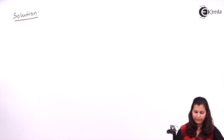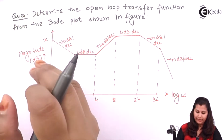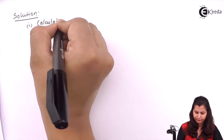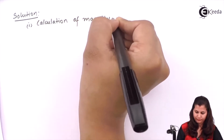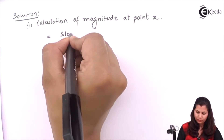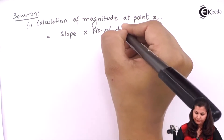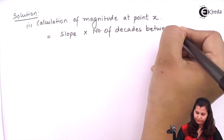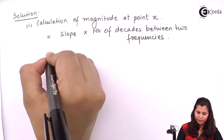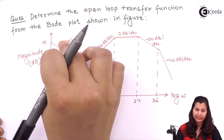First we will calculate the magnitude at this point, because it is in the positive side. Its magnitude will be equal to slope multiplied by the number of decades between the two differences. The slope here is minus 20 dB per decade, so we will take slope as 20.